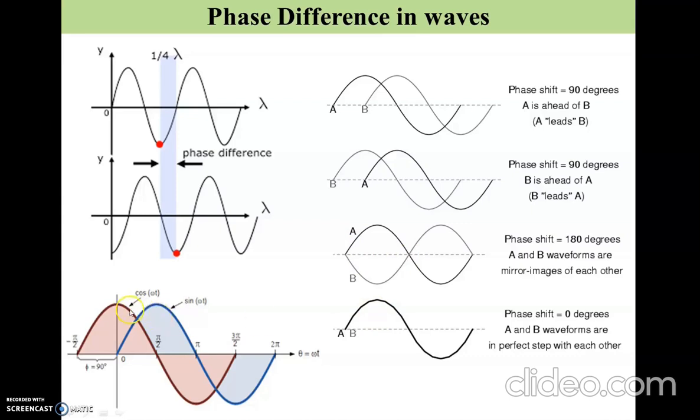Again, for this cosine wave, we can say that the cosine wave is ahead of the sine wave by 90 degrees.